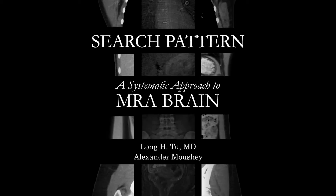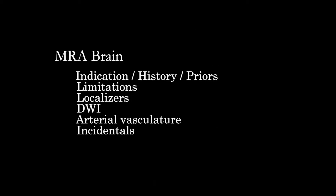Today we're going to talk about a basic approach to the MRA brain, or MR angiography of the brain. These studies can be used to evaluate for aneurysms, arterial stenosis, occlusion, and other vascular anomalies. I'll go through the overall structure of how we're going to approach this and then take you through a step-by-step basic way to start evaluating these exams.